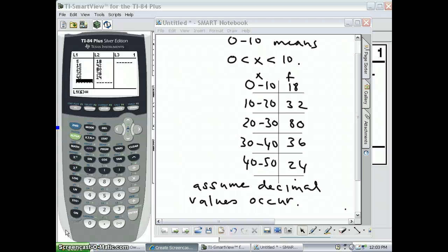Okay, let's look at how to make a histogram for a group frequency distribution. In this case, we have intervals such as 0 to 10, 10 to 20, and we have frequencies of numbers in these intervals.